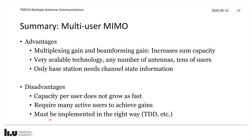In summary for multi-user MIMO, the advantage is that we still get the multiplexing gain and the beamforming gain, which increases the sum capacity of the system. It's a very scalable technology in the sense that we can have any number of antennas at the base stations and serve at least tens of users. It's also only the base station that really needs to know the channel state information, because it controls all of its antennas and steers beams — estimating channels from uplink pilots and then transmitting in the downlink. The disadvantage is that the capacity per user does not grow as fast as the sum capacity, since every user benefits from a beamforming gain but that is a logarithmic gain with number of antennas, and in the downlink you also share power between users.